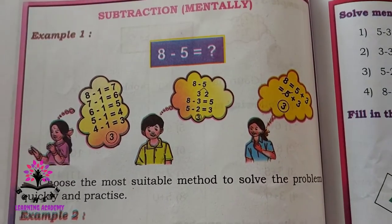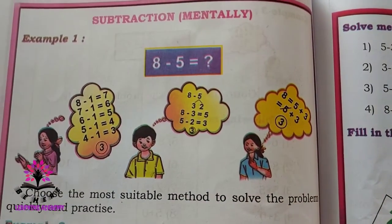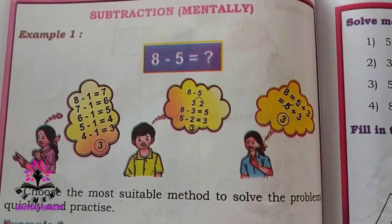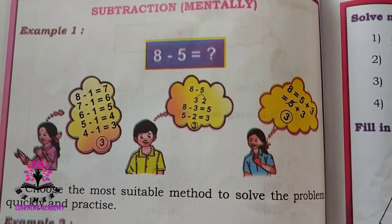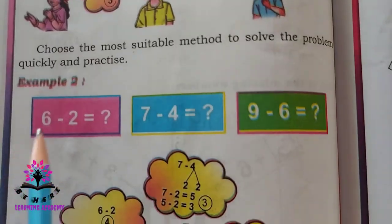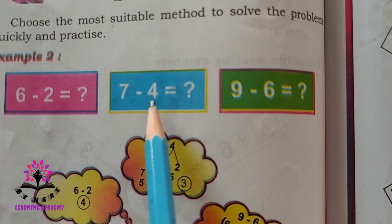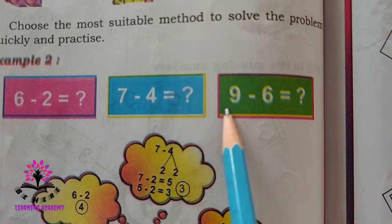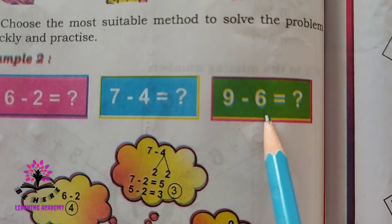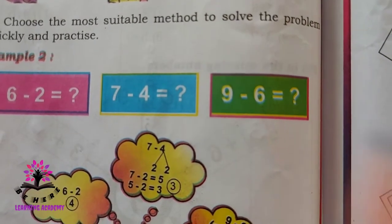Now let us learn subtraction — to solve subtraction problems mentally. Eight minus five is how much? Do it mentally. Eight minus five is three — good. Six minus two is four. Seven minus four is three. Nine minus six is three.